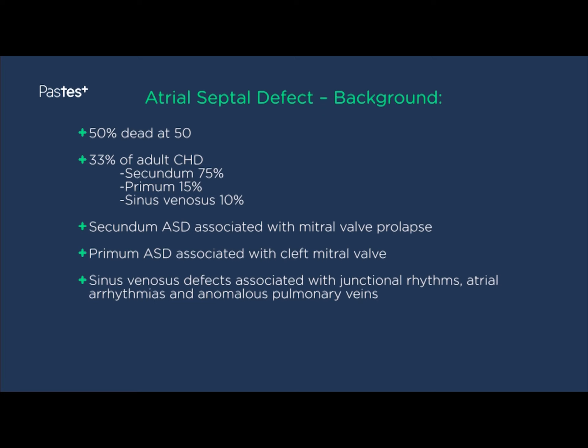Left untreated, atrial septal defects carry a poor prognosis, with 50% of patients being dead aged 50. They account for about 33% of adult congenital heart disease, with secundum ASDs accounting for about 75%, and the rest split between primum and sinus venosus defects. Secundum ASDs are frequently associated with mitral valve prolapse, and primum ASDs with cleft mitral valves. Sinus venosus defects are associated with junctional rhythms, atrial arrhythmias, and anomalous pulmonary veins.